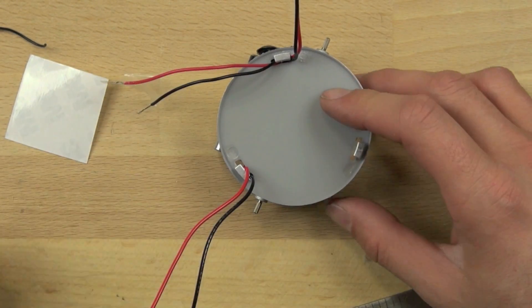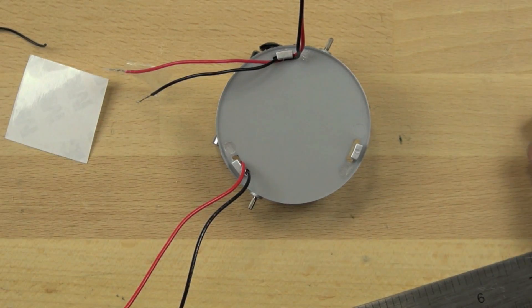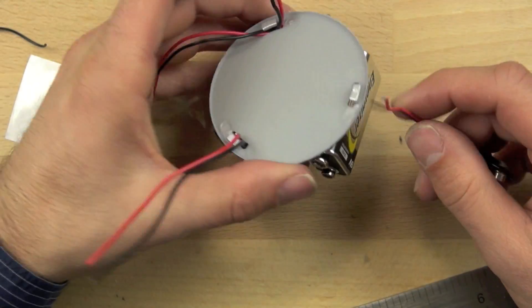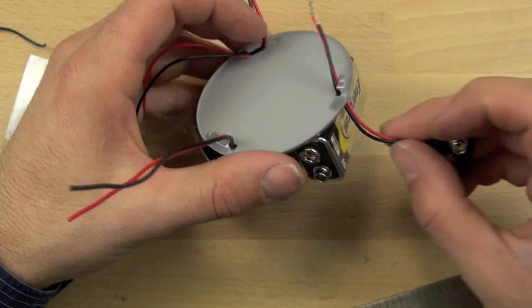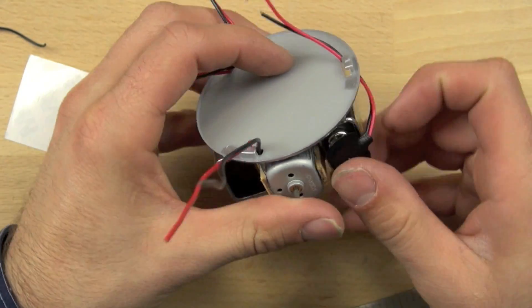We've got one side connected, and now we're going to do the other side. Again, we'll use our 9-volt battery connector, thread it through the holes, and connect it to our battery.